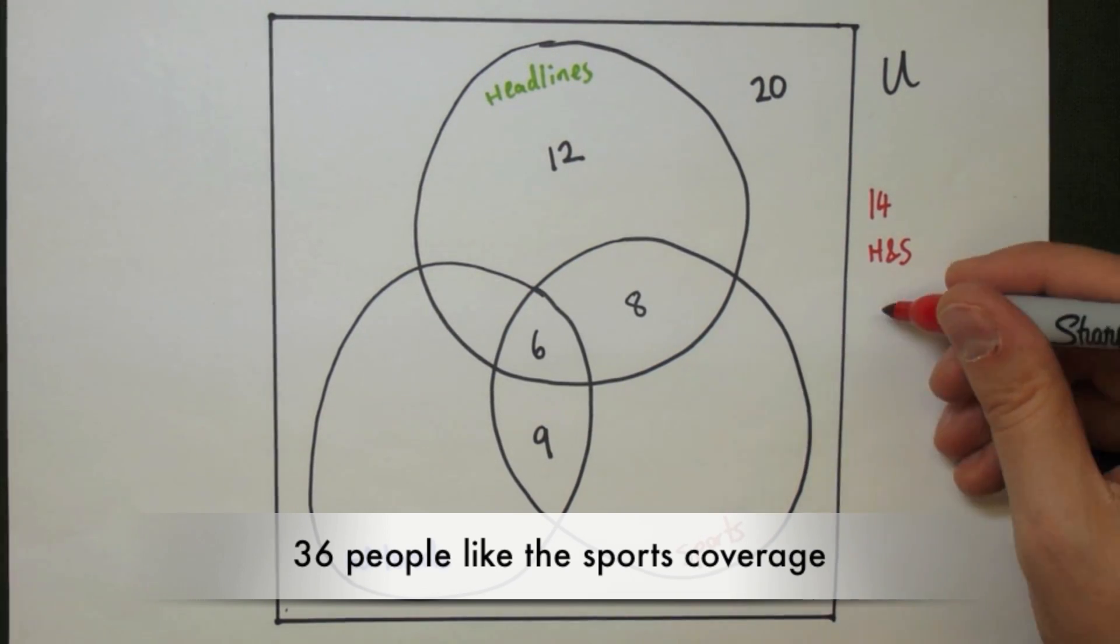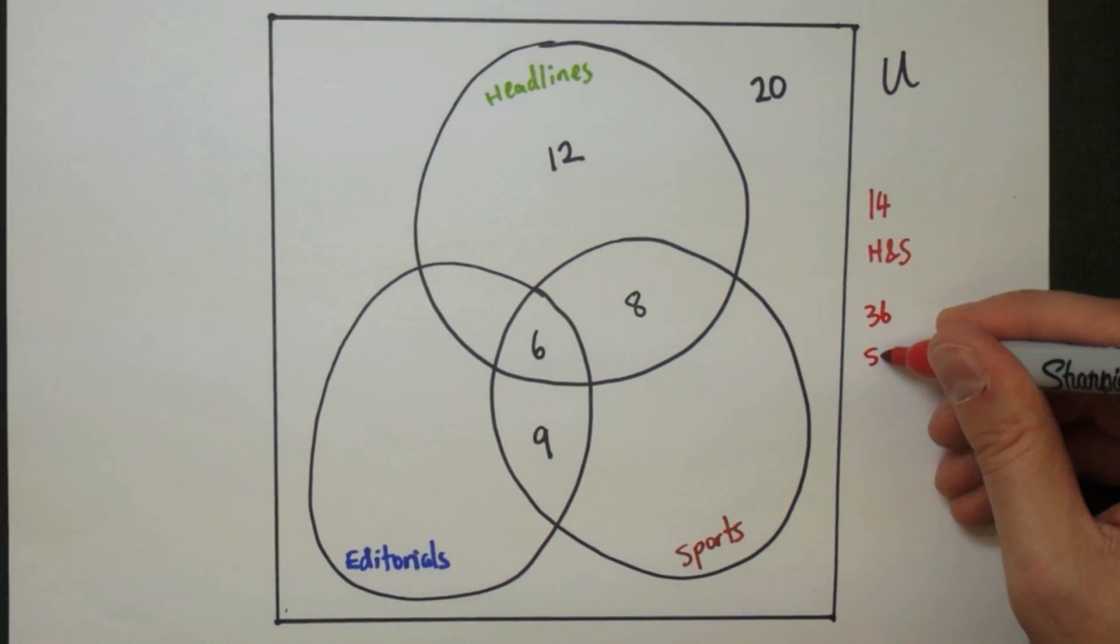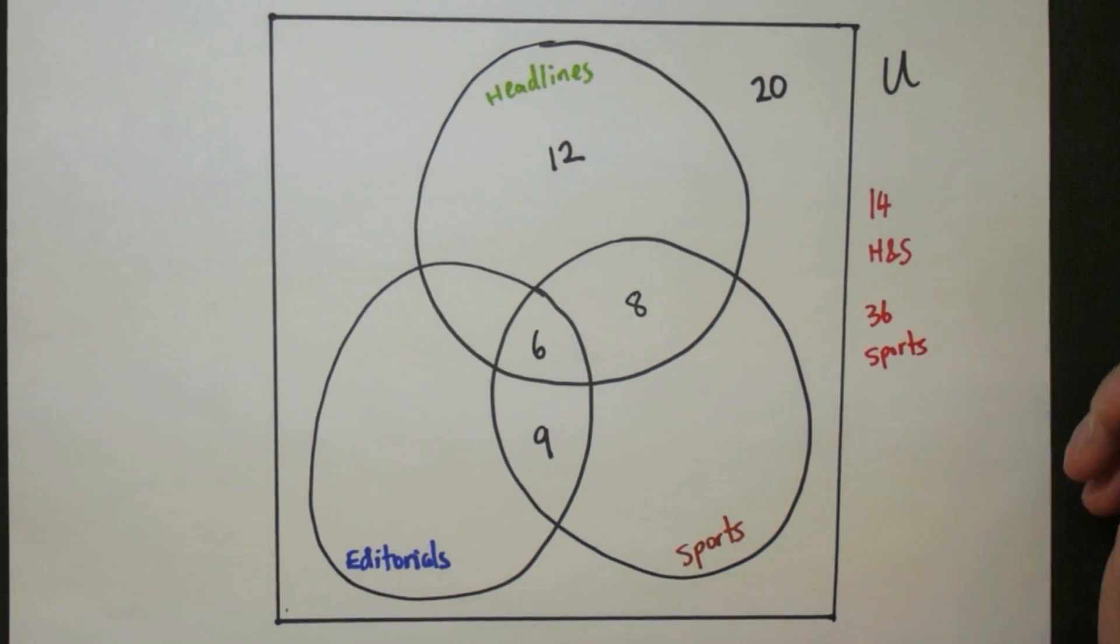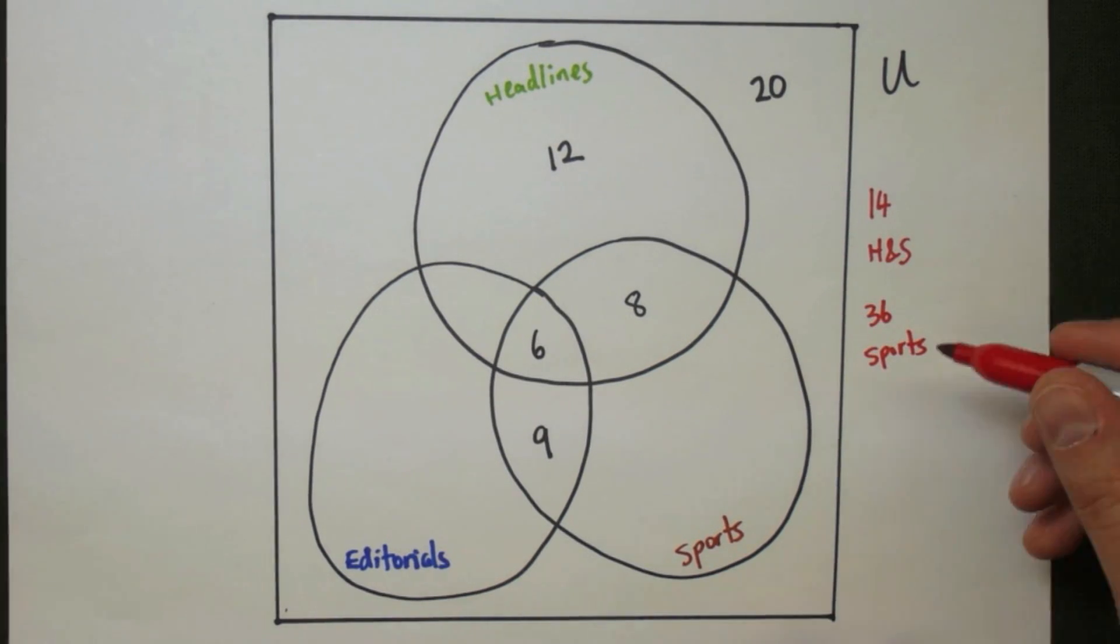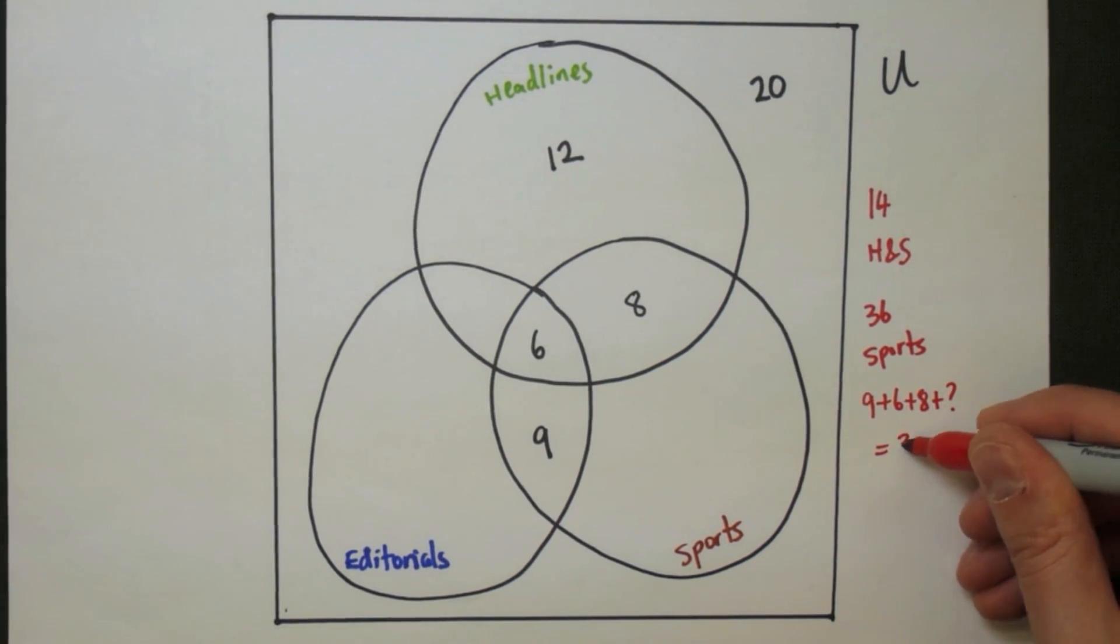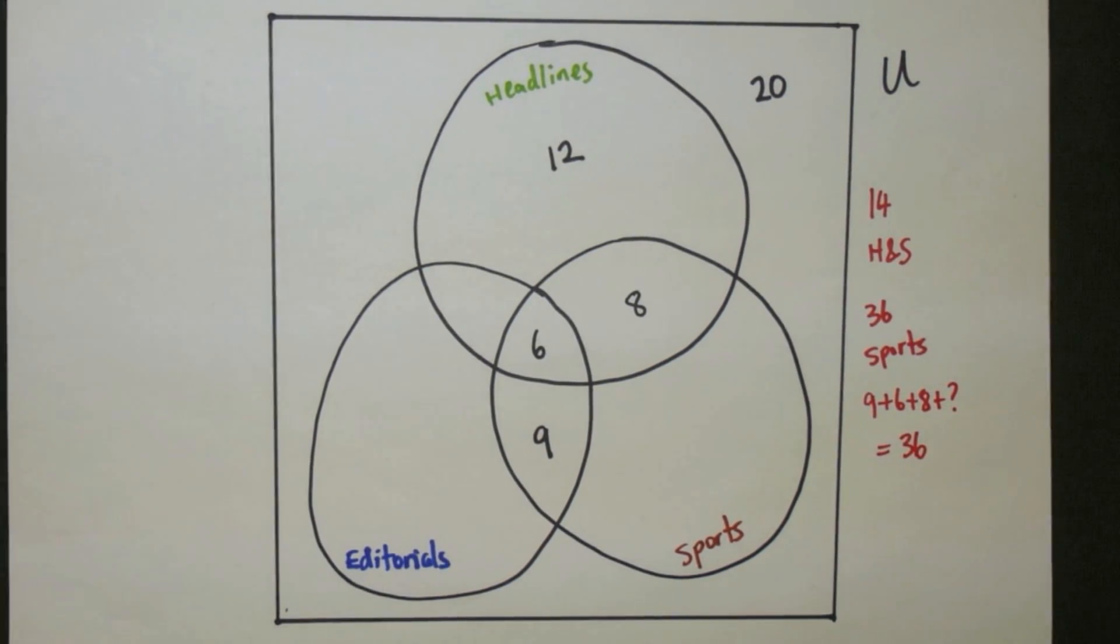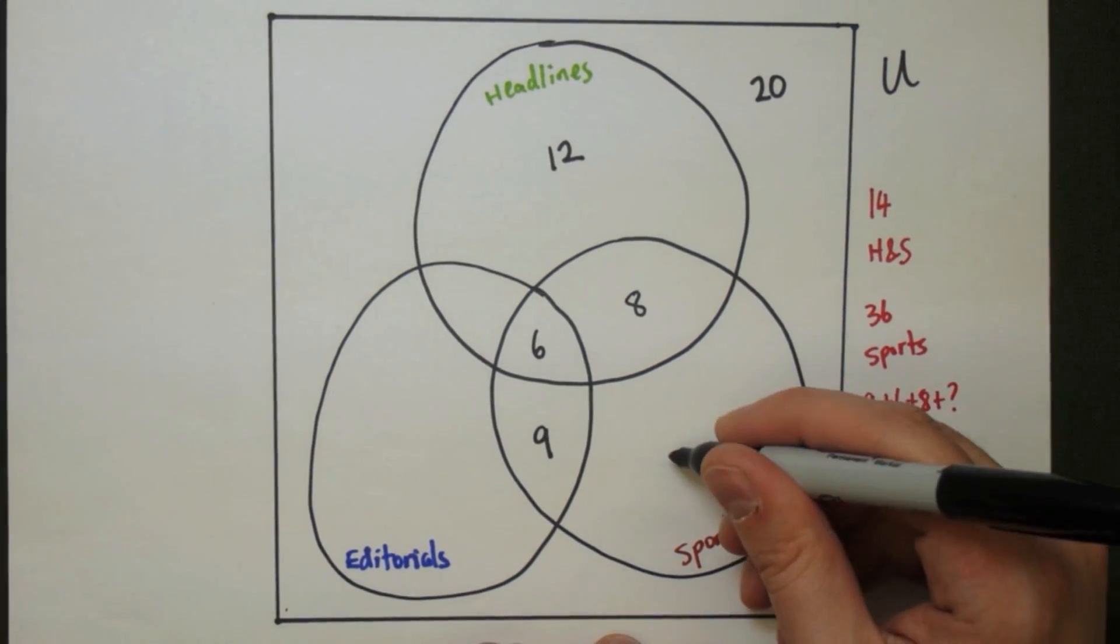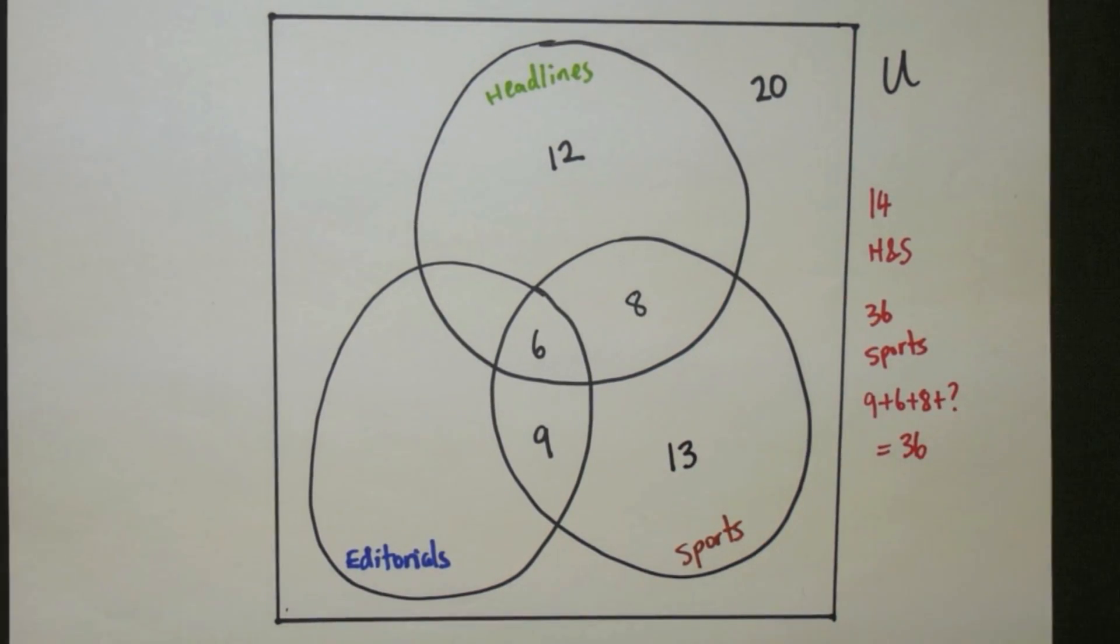36 people like the sports coverage. So we have 36 people. In the sports circle, we already have 9 people and 6 people and 8 people. And so the remaining part has to give us the remaining. So all those added together give us 36, which means there are exactly 13 people in the sports, but neither of the other two.